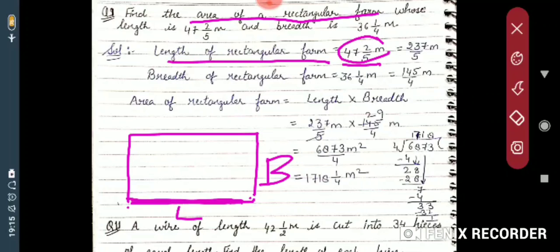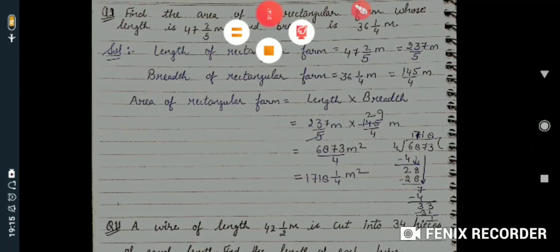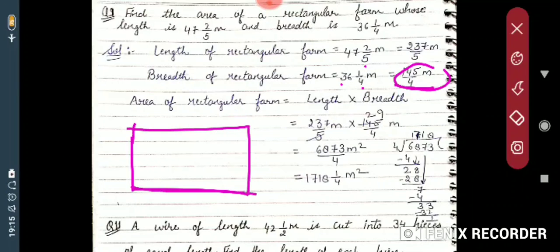The length is given as 47 and 2/5 meters in mixed fraction. Convert it to improper fraction: 47 multiplied by 5 plus 2 gives 237 upon 5 meters. The breadth is given as 36 and 1/4 meters. Converting: 36 multiplied by 4 plus 1 gives 145 upon 4 meters. So length is 237/5 meters and breadth is 145/4 meters.